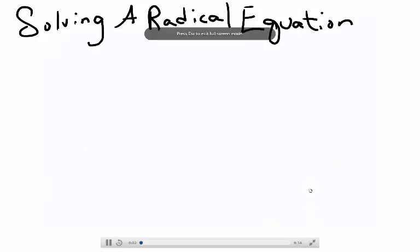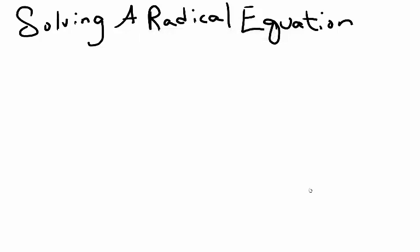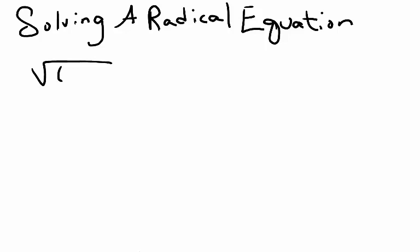In this video, we're going to learn how to solve a radical equation which contains two radicals. Suppose I have the equation: the square root of 6x plus 1 minus the square root of x minus 4 equals 5.